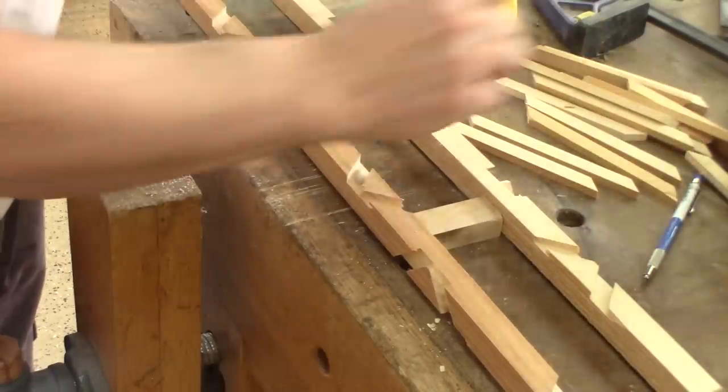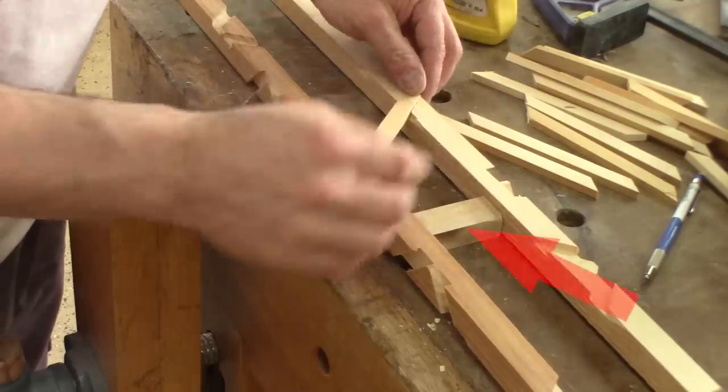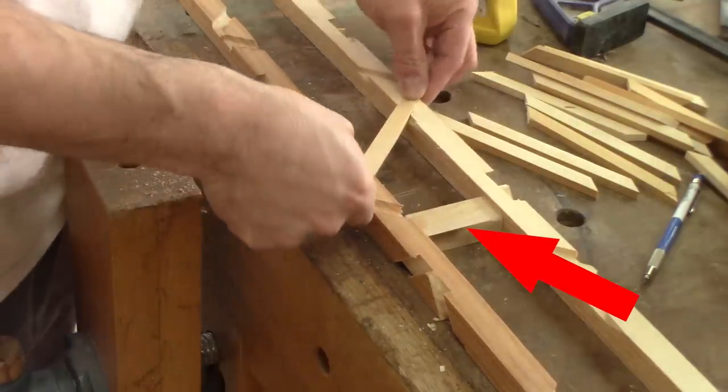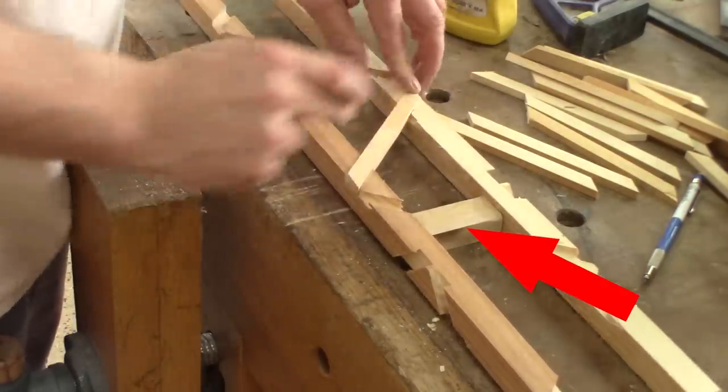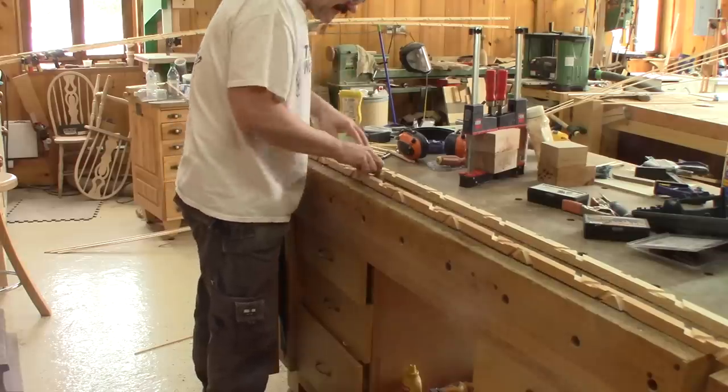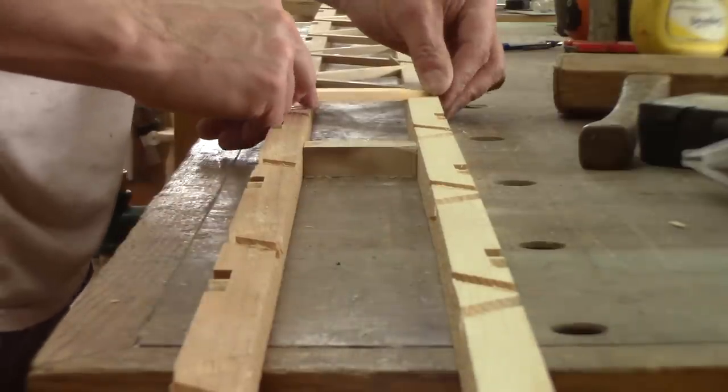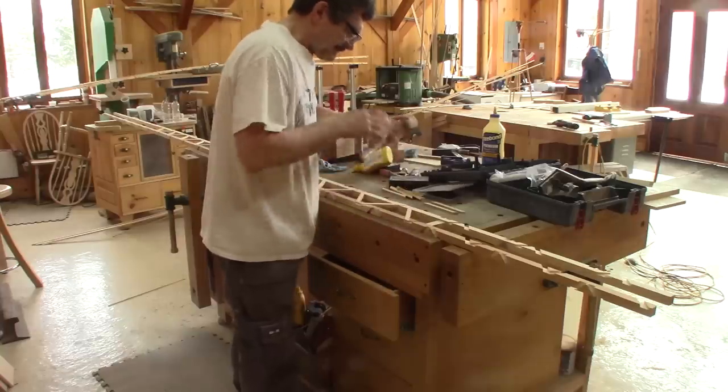Now I can start to glue this. And to make sure I have the right space in between the strips, I use the same spacer as before. Doing this is quite simple. A bit of glue and I press the braces in place, they hold with friction only.